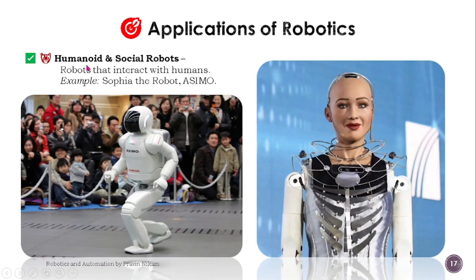Finally, humanoid and social robots interact with humans — for example, Sophia the robot and the ASIMO robot. Thank you very much. We will see the next points in the next video lecture.